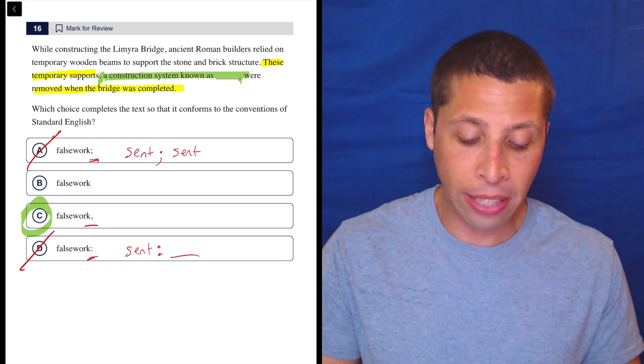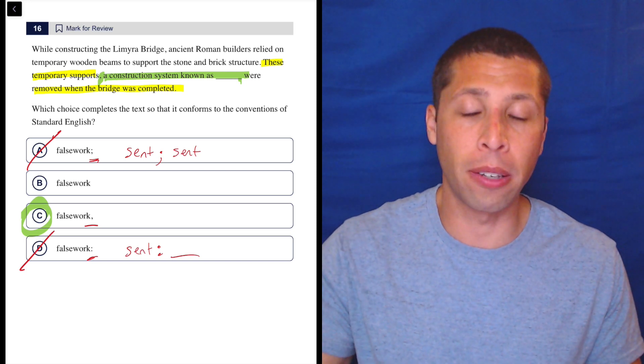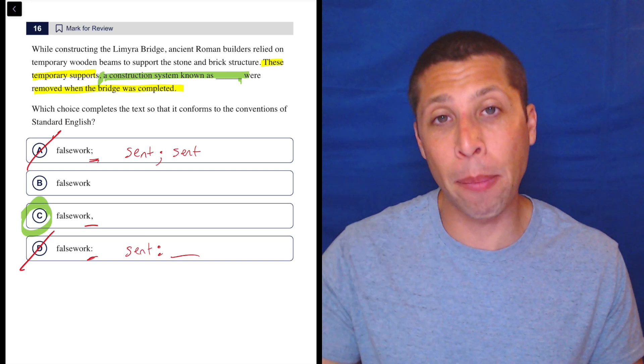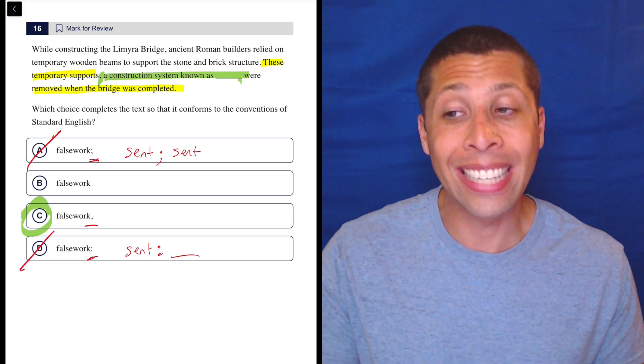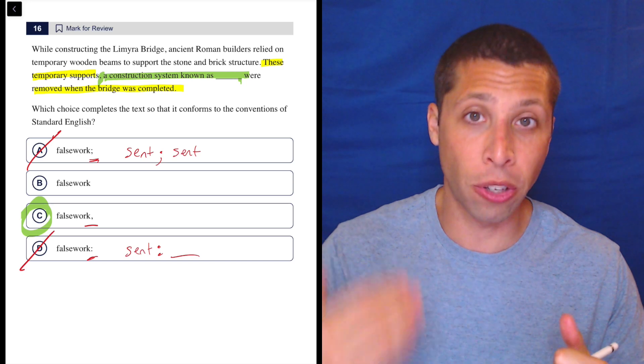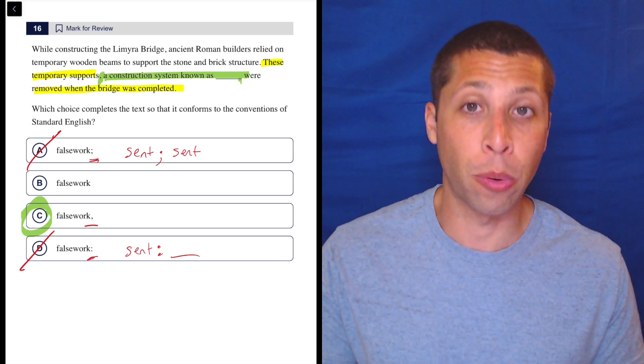But still, notice I started with A and D because those are easier punctuation marks to understand. And then when those failed, I can now make the decision of whether or not I need a comma. It's easier to do without all the cluttered other choices. So try to prioritize the rules that you're going to test as you go through punctuation questions.